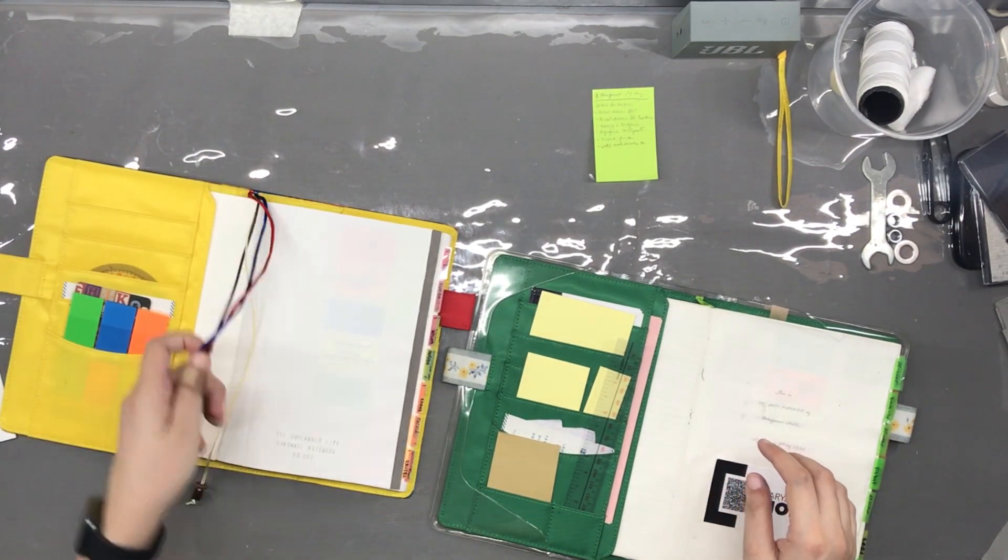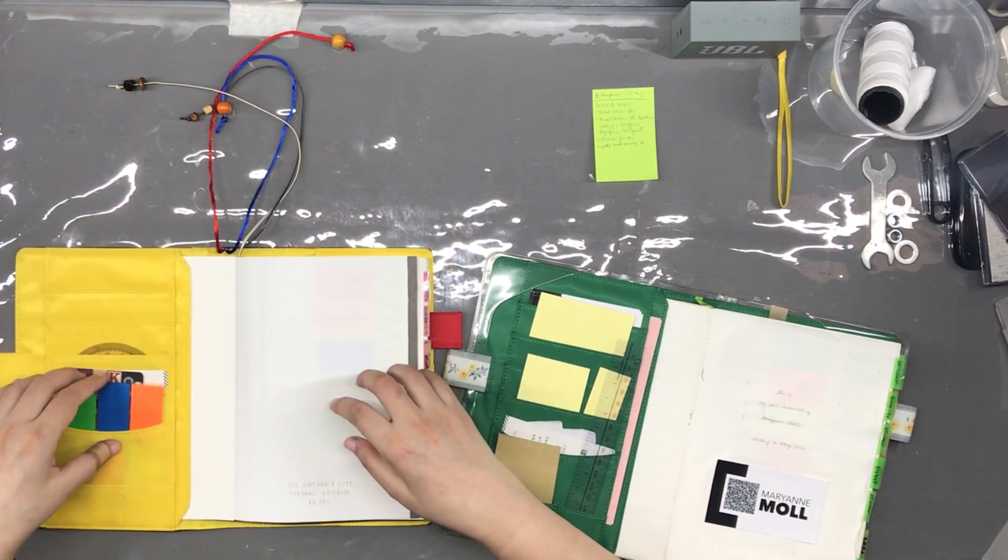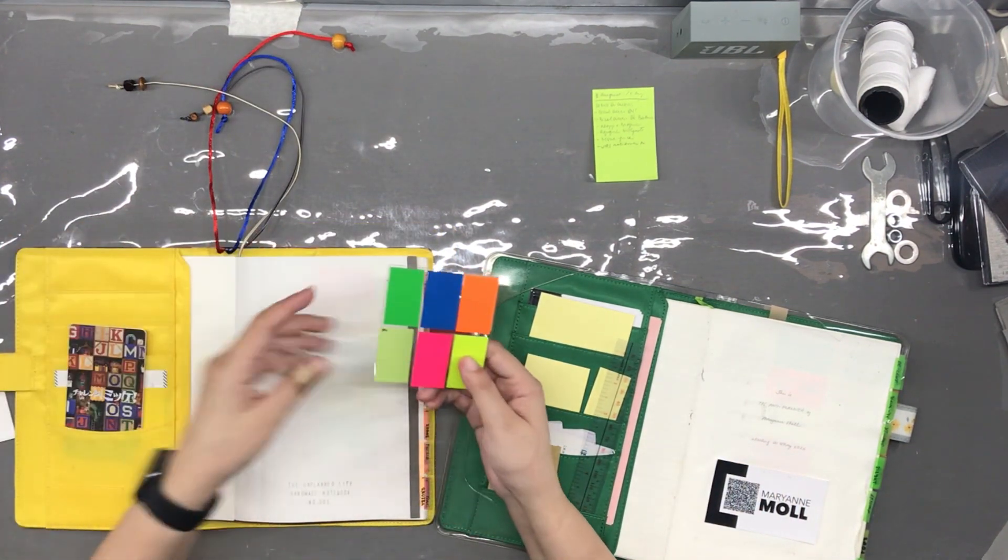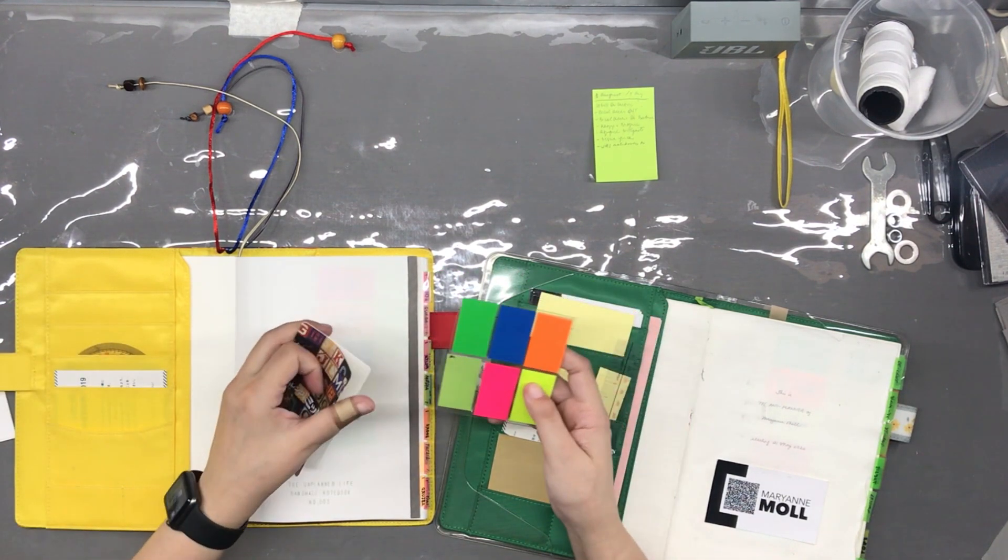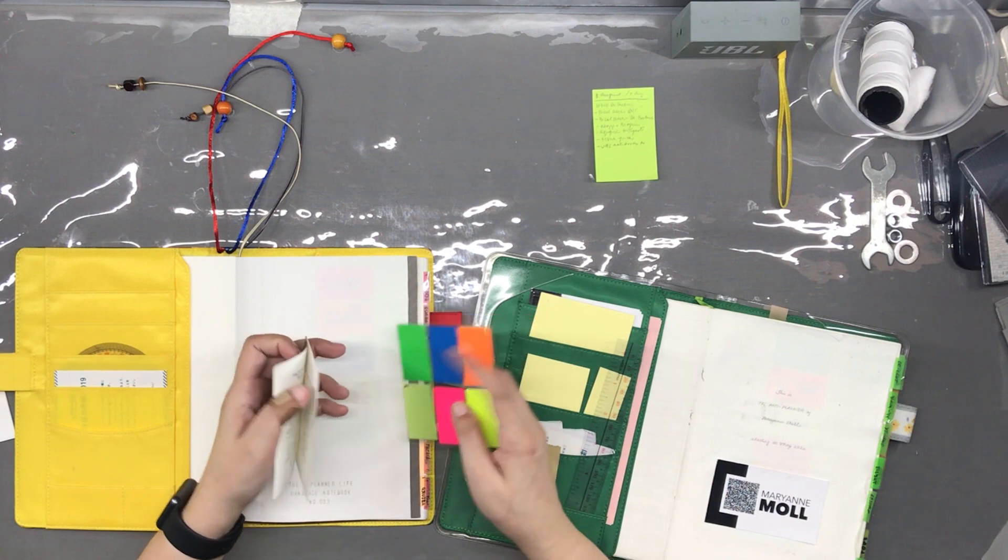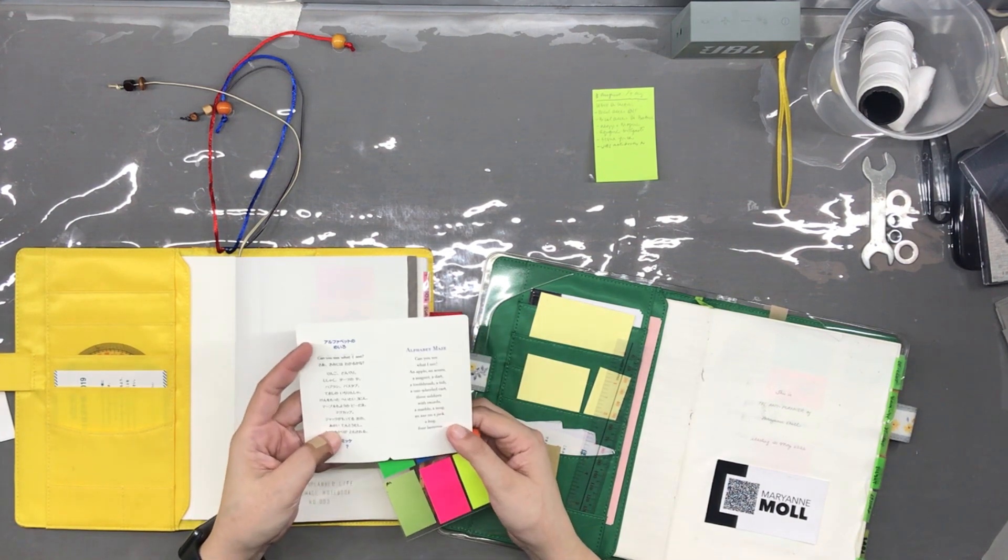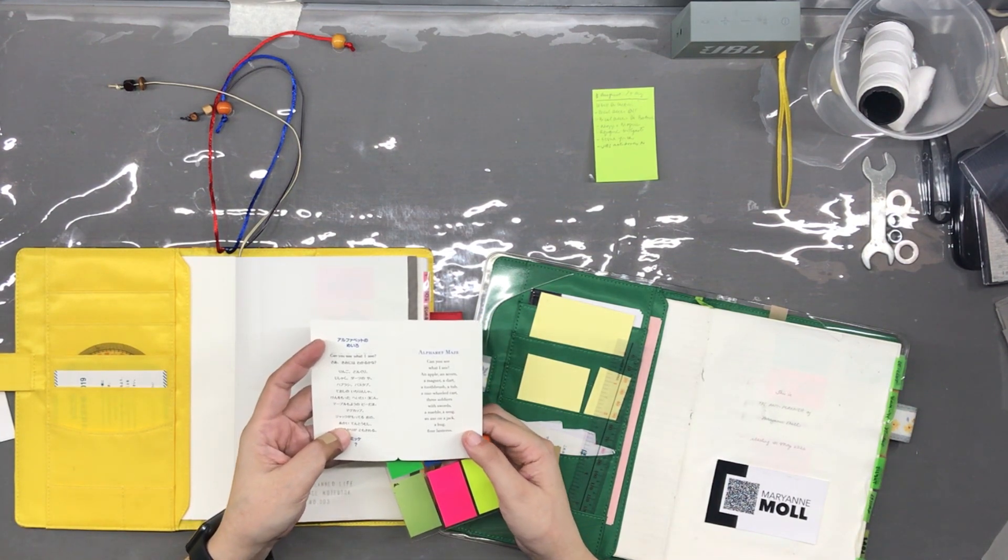This green one from Hobonichi on the right and the notebook inside it is the current one that we will be moving out of. Now I have made a video of me making this notebook using limited resources during the height of the lockdown and I will leave a link in the description box.